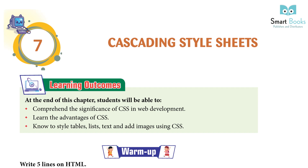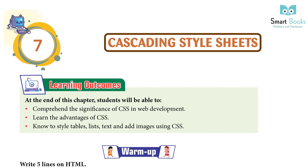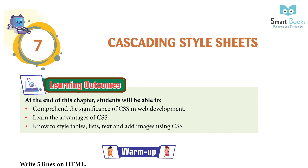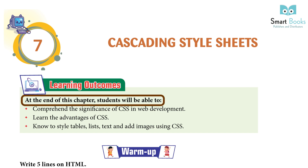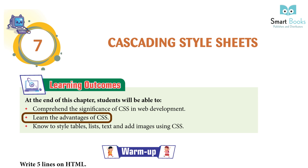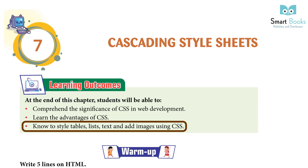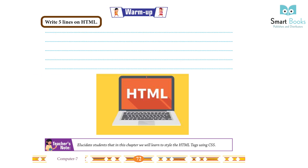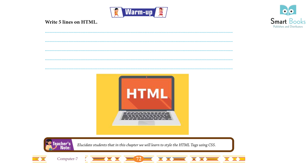Chapter 7: Cascading Style Sheets. Learning outcomes: at the end of this chapter, students will be able to comprehend the significance of CSS in web development, learn the advantages of CSS, and know how to style tables, lists, text, and add images using CSS. Warm up: write five lines on HTML.